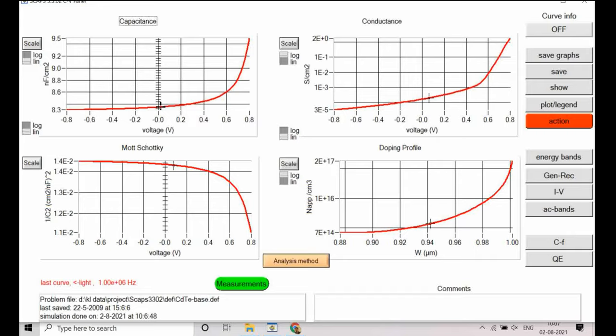And then from this CV curve they have plotted Mott-Schottky plot. So 1 by C square versus voltage. So you can see from this graph Mott-Schottky plot we can find out the carrier density and the knee voltage or built-in voltage in the device. These things we can simulate out from this curve.